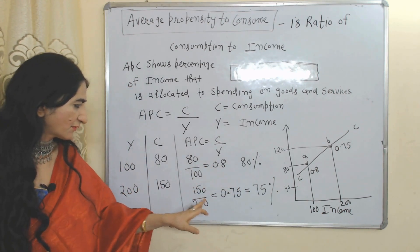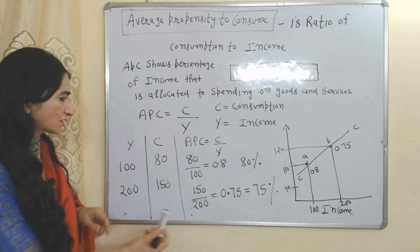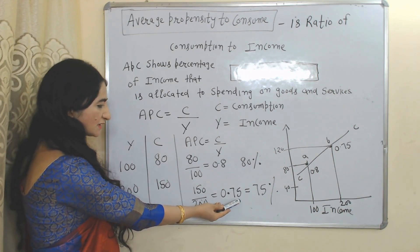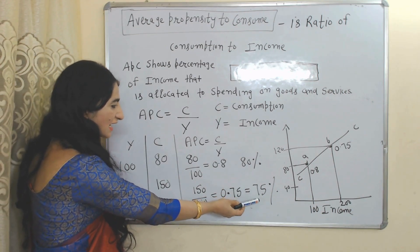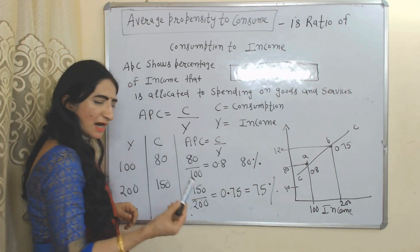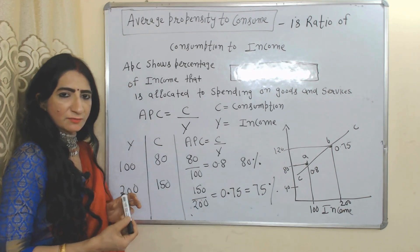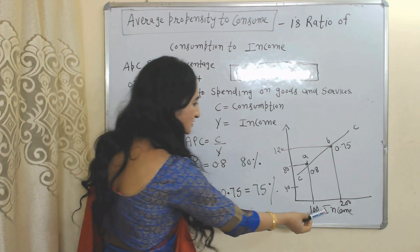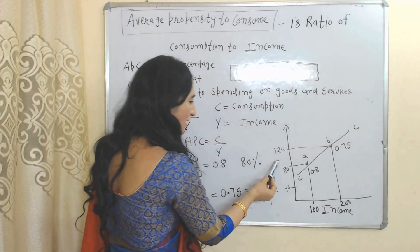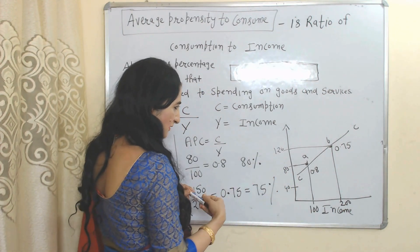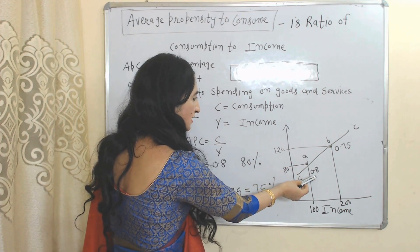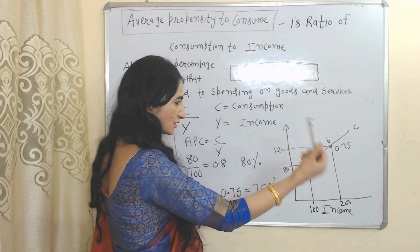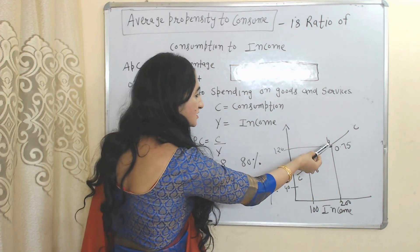In the second case, our APC is 0.75, meaning 75% of our income is being consumed. On the x-axis is income and on the y-axis is consumption. Point A shows that 80% of income is being consumed, and point B shows that 75% of income is being consumed.